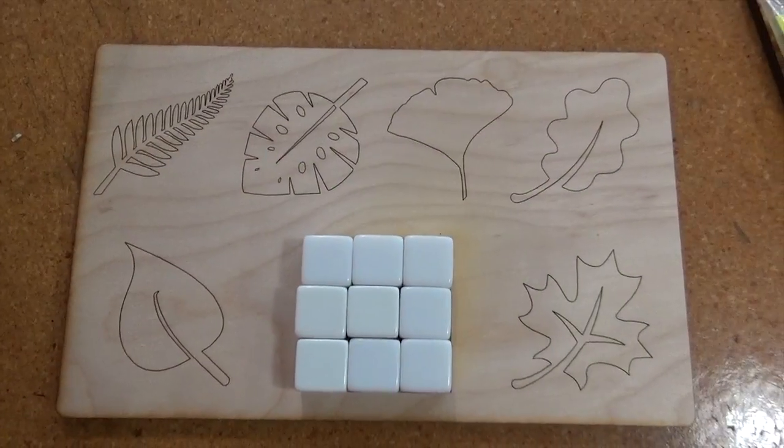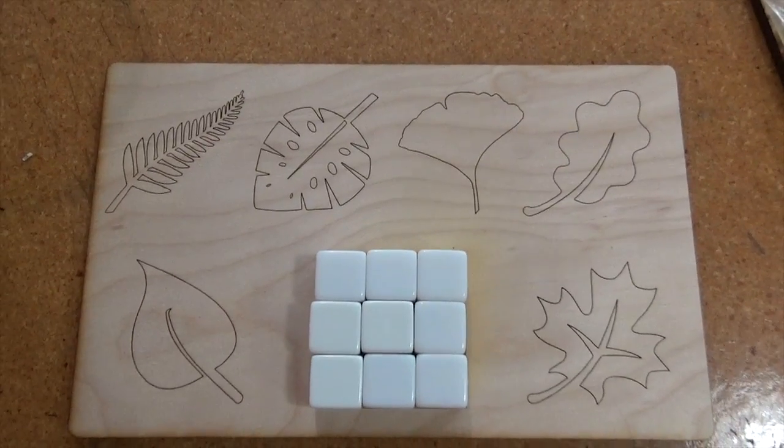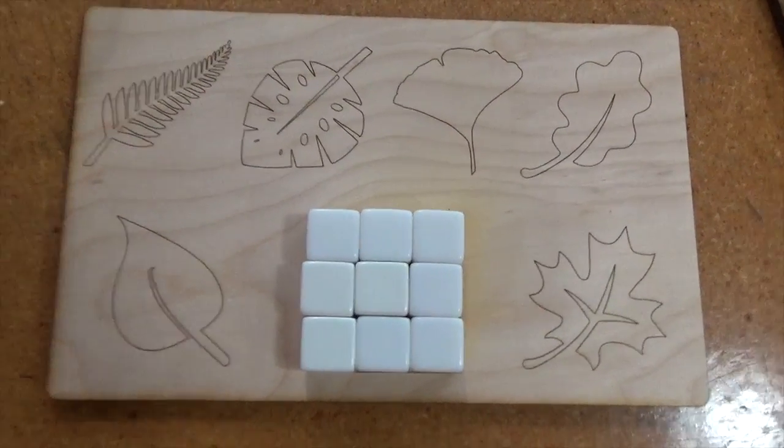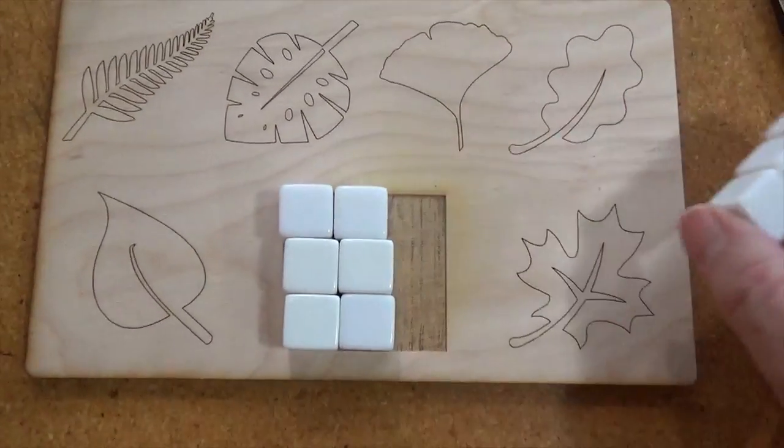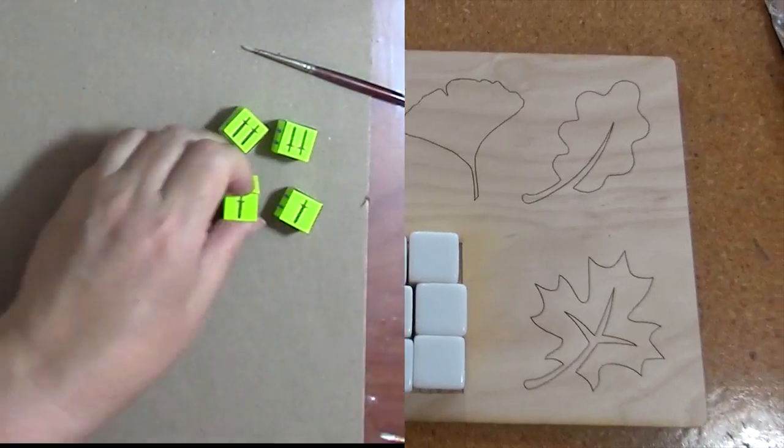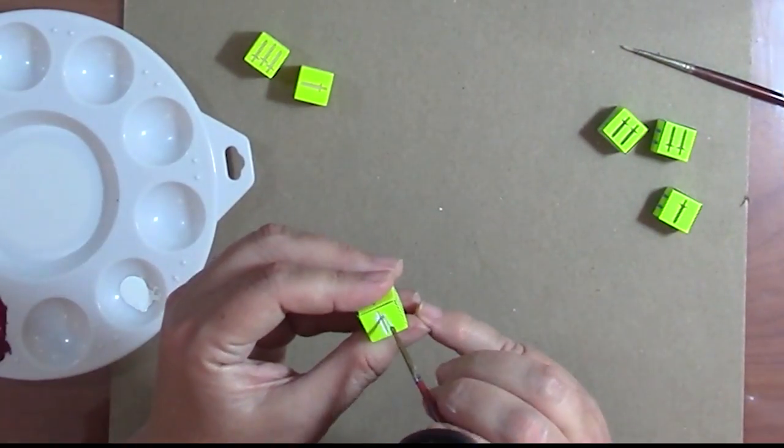At this point, Steve suggested doing something that showed the six designs that people were expected to make. So we whipped up this little board here that has the pictures of the six leaves and a space to do the puzzle.